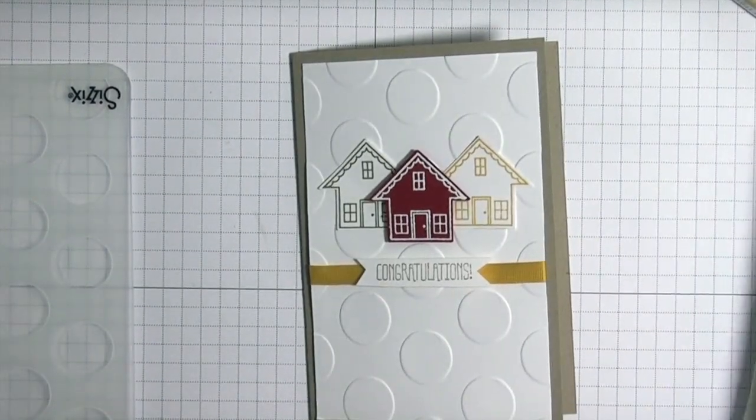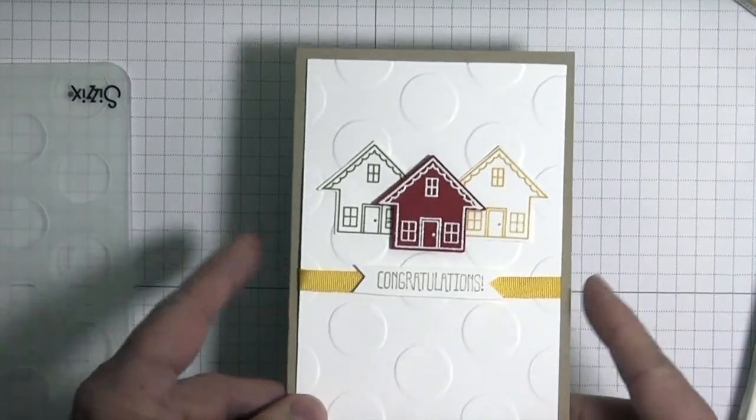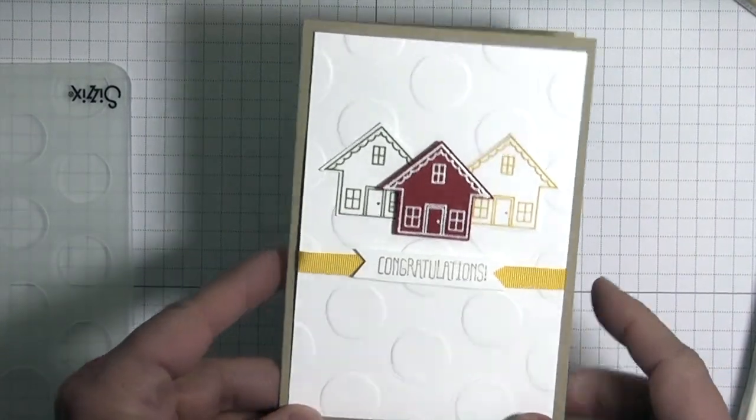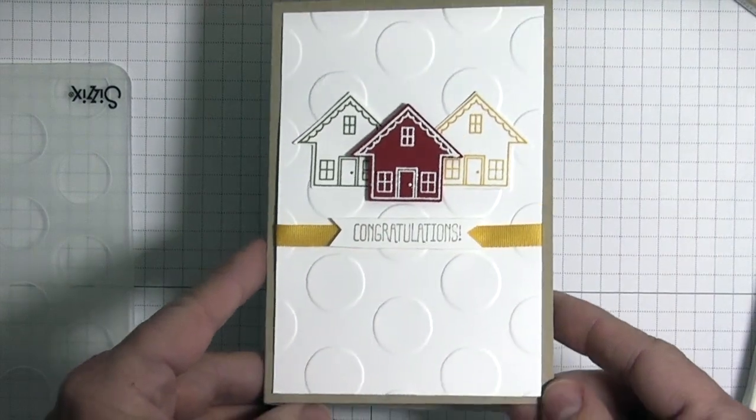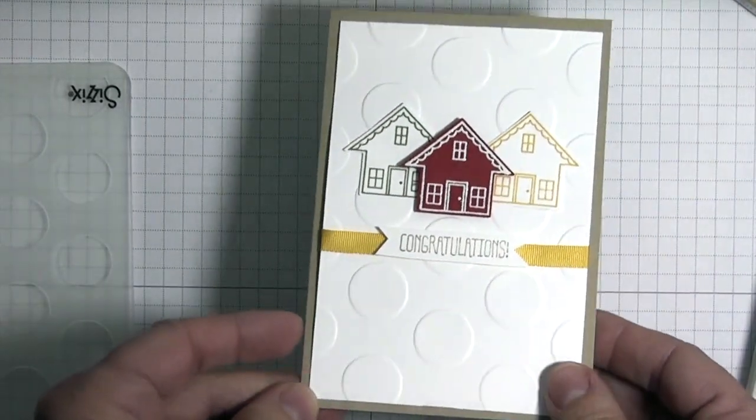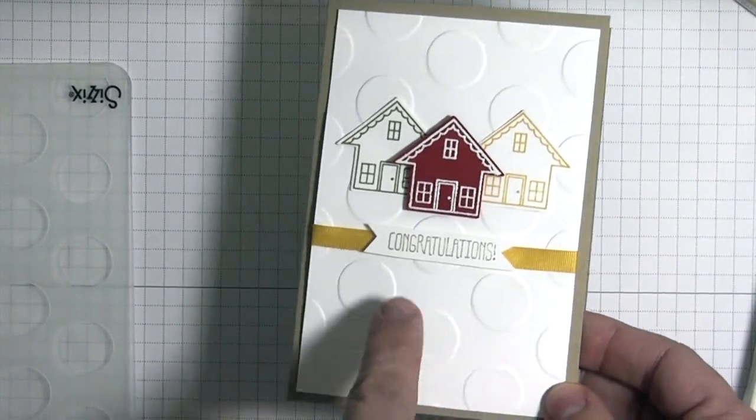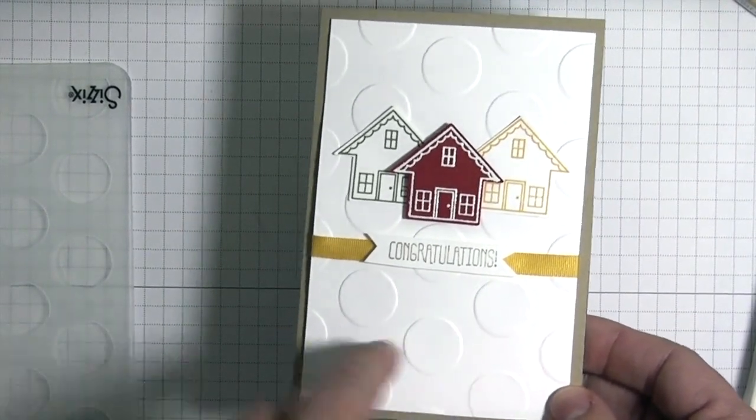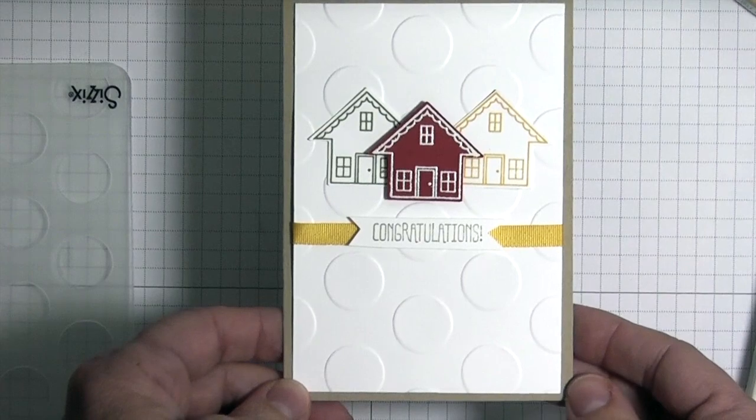I cut the Crumb Cake cardstock down to three and a half by five, and then this panel is a little bit larger. I'm actually going to cut it down and make it a little bit smaller for the sample.